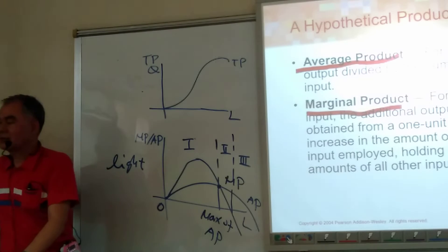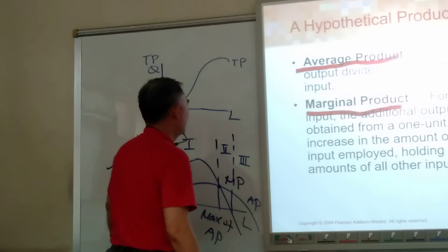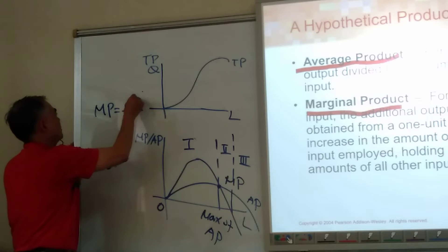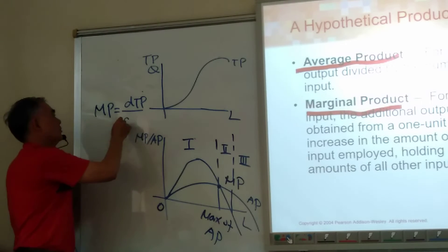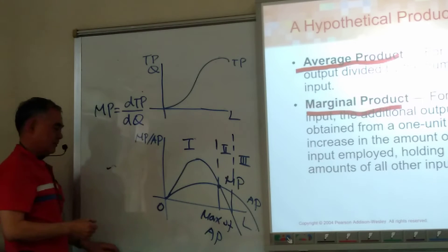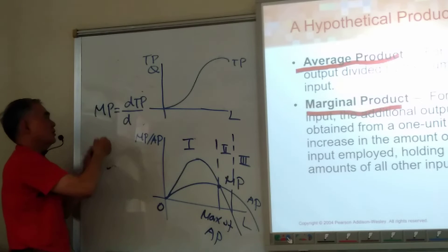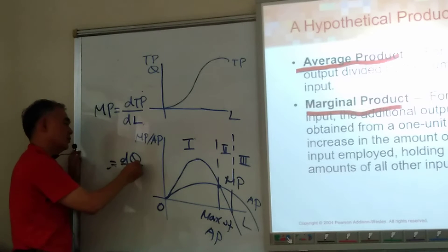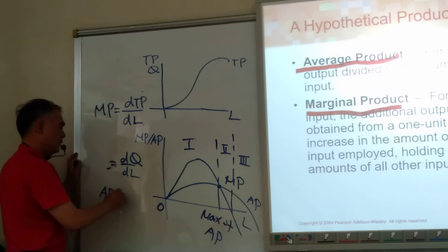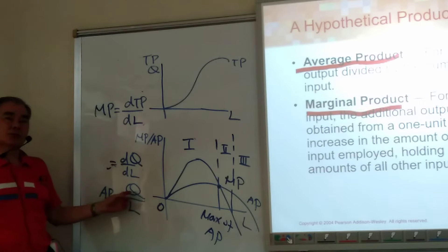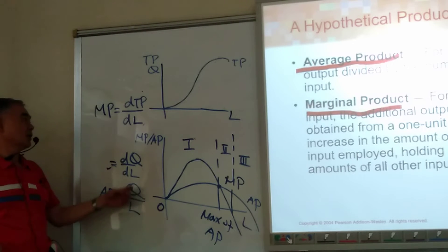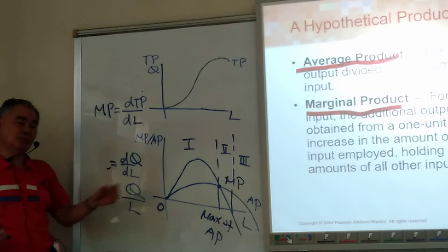Here is the formula. What is MP? MP equals the change in total product due to the change in input — that's ΔQ over ΔL. For average product, it is the total production level divided by the amount of input used — production level per unit of input. This represents production changes due to a change in input.